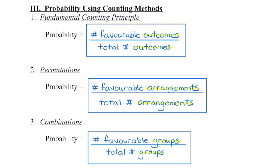Some probability problems may involve counting methods such as the fundamental counting principle, permutations, or combinations. We use the fundamental counting principle when we have so many choices at each stage. We use permutations if the order is important, and we use combinations if the order is not important and we are choosing a group of items.